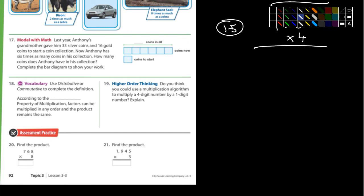Last year, Anthony's grandmother gave him 33 silver coins and 16 gold coins. To start a coin collection. She must be wealthy. Now, Anthony has 6 times as many coins in his collection. How many coins does Anthony have in his collection? Well, first off, you're going to have to total how many coins he had, because we're not talking about whether they're silver or gold. And then it's 6 times as many, whatever that total is. And so the question is, is how many does he have in his collection?